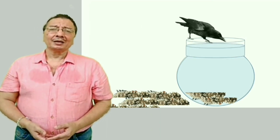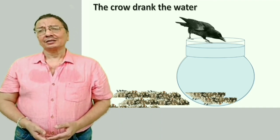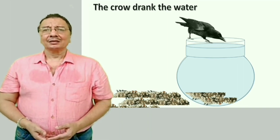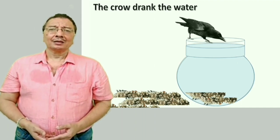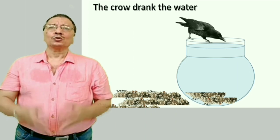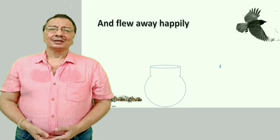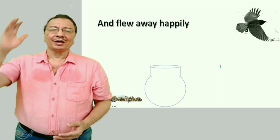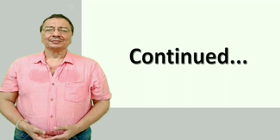Kauve ne pani piya — The crow drank the water. Aur khushi khushi ud gaya — And flew away happily. 'Flew' is the past tense of 'fly'. 'Happily' means khushi khushi.